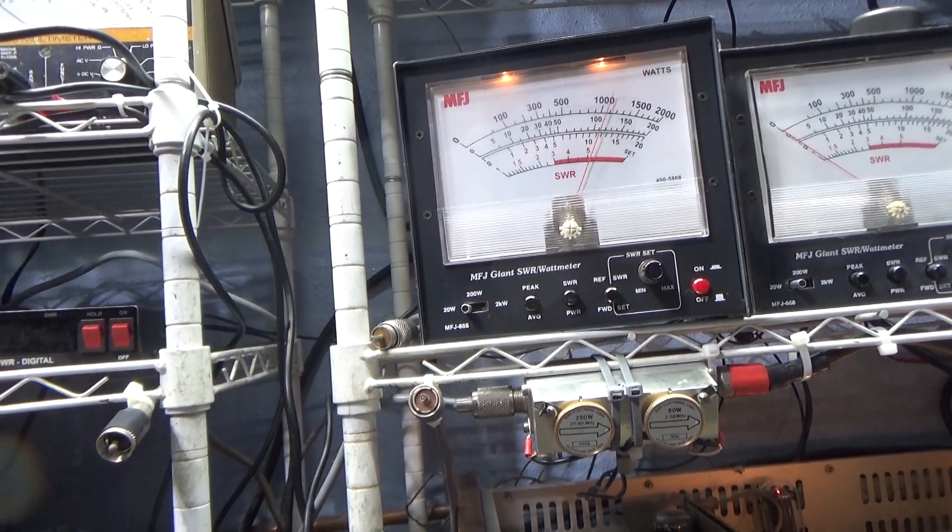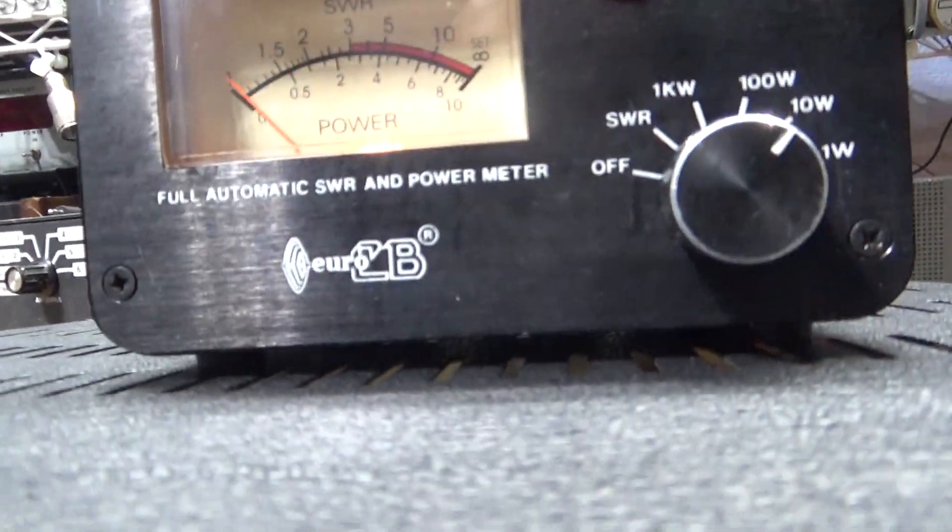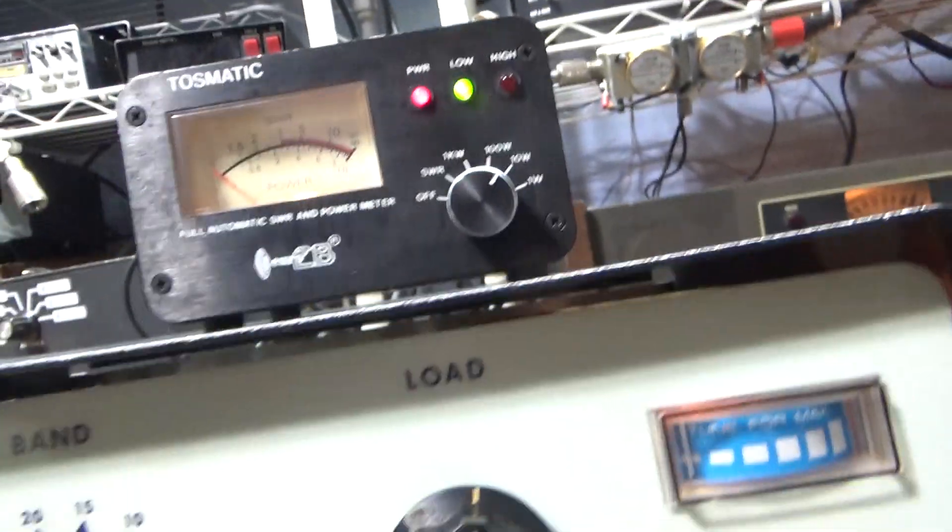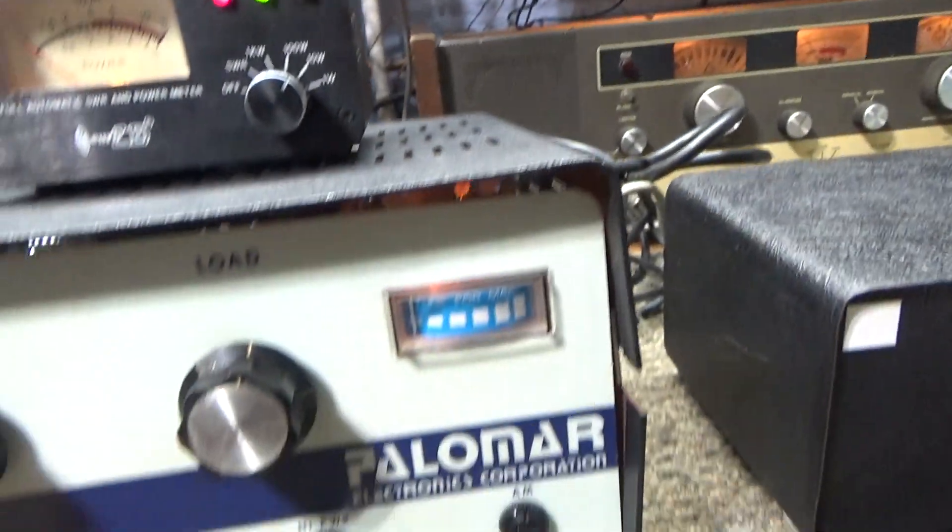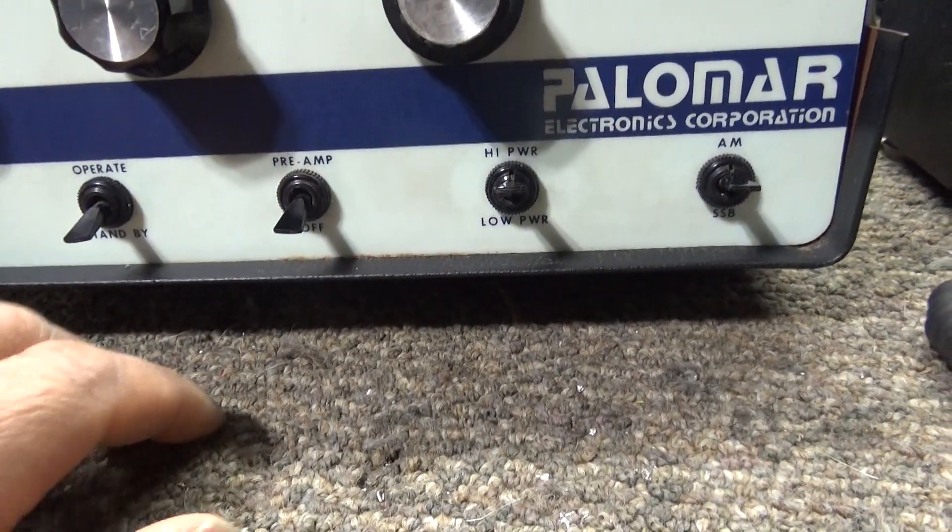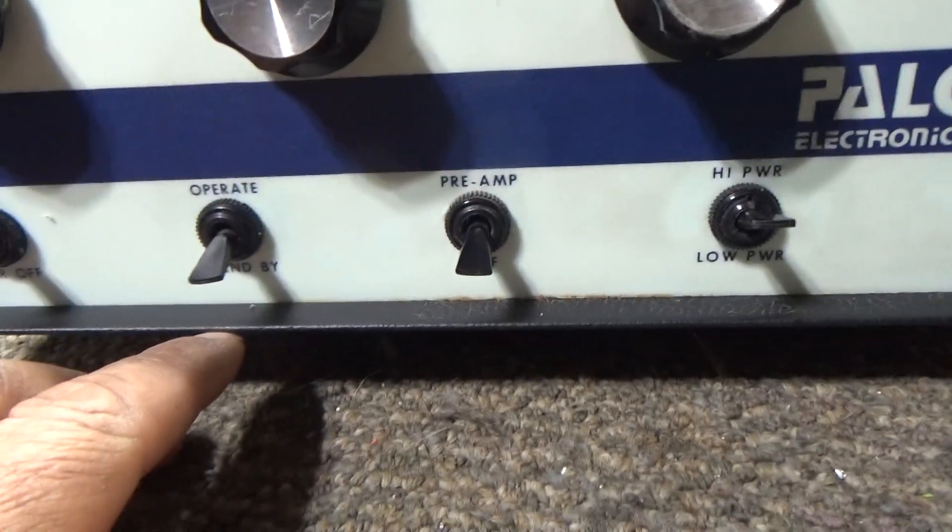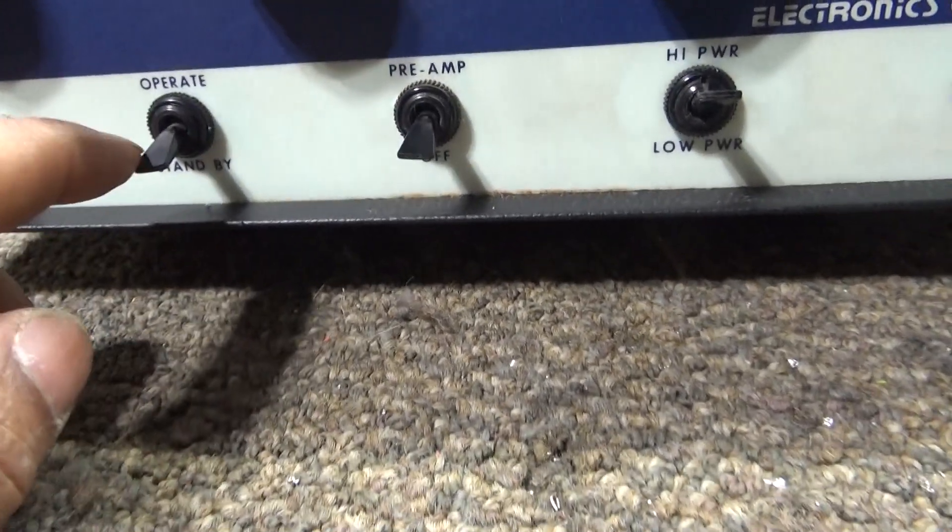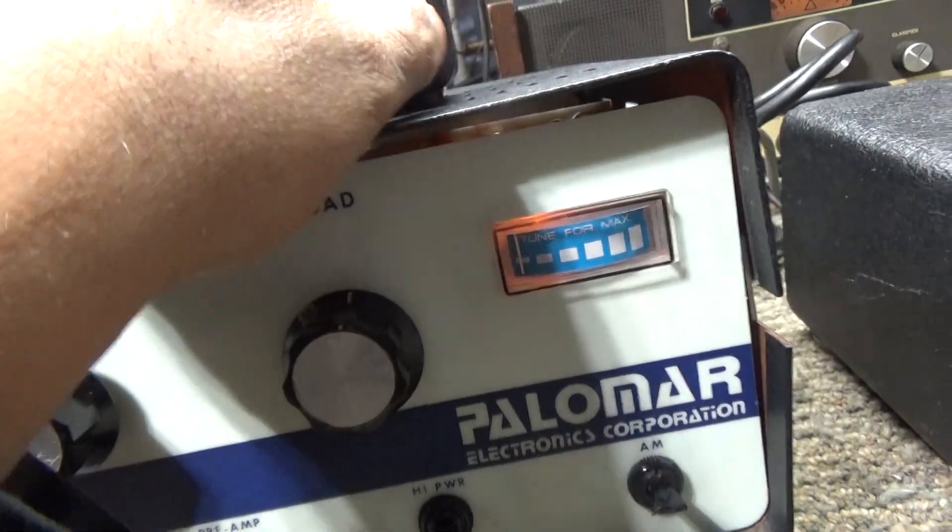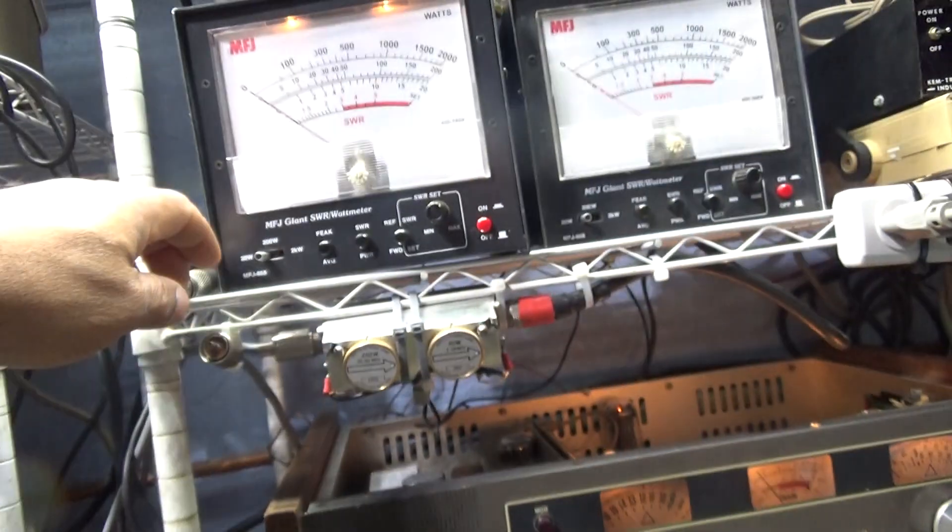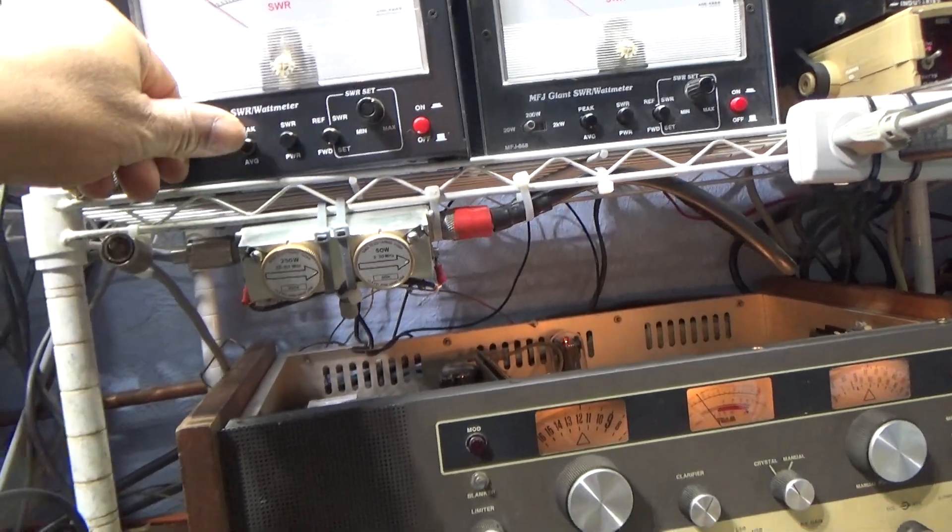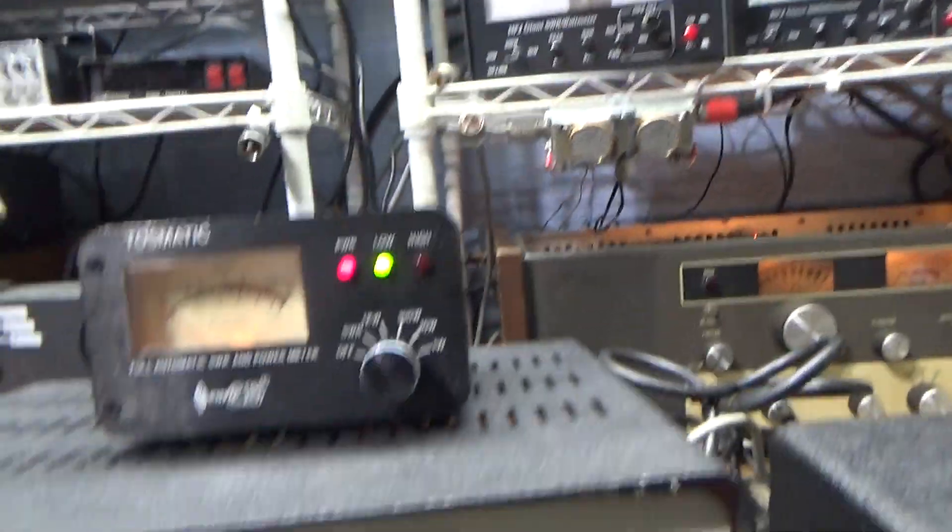And last, since before we put up the Palomar 300a with all his clothes on this time, you know we got the covers on it, we're gonna turn it on and put the Tosmatic on the thousand watt scale and put the MFJ on the 2,000 watt scale on average.